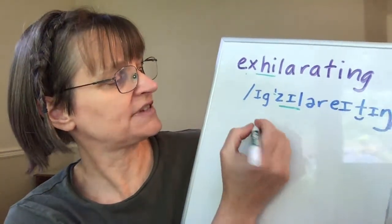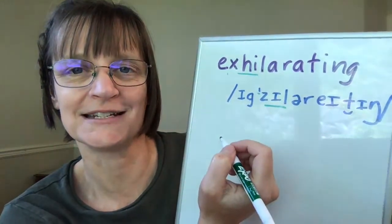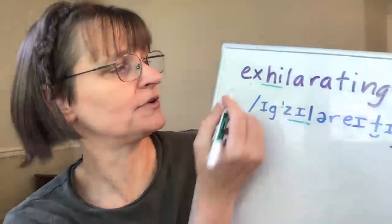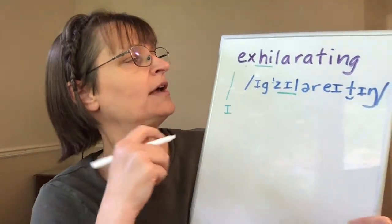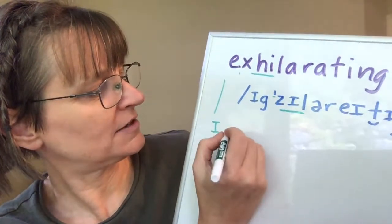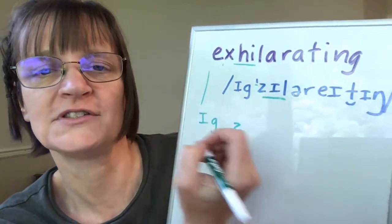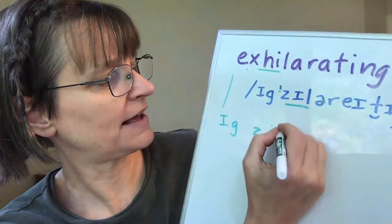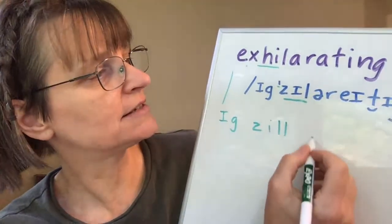Often in unstressed syllables, the letter E is going to say the sound IH. So we might think we have to say something more like an E in this word, but it sounds like IG. Then I want to make sure I have my voiced Z sound — EXIL. There's my IH sound again. I'm going to write that like this: ZIL. That would follow the spelling rules: EXIL.